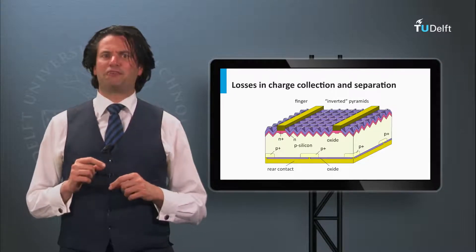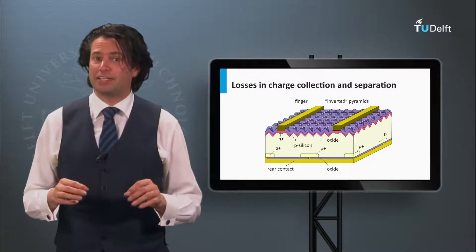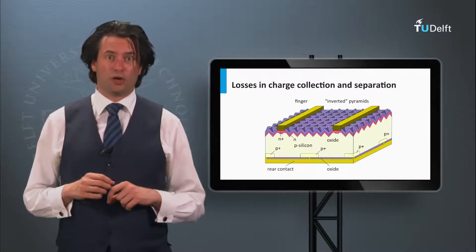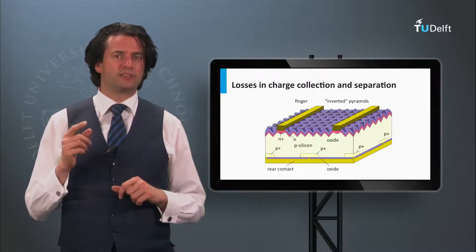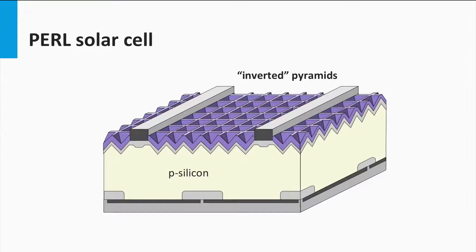PEARL is an abbreviation for Passivated Emitter Rear Locally Diffused. The name indicates the two important concepts integrated into the solar cell. The optical losses of the PEARL solar cell at the front side are minimized using three important concepts.